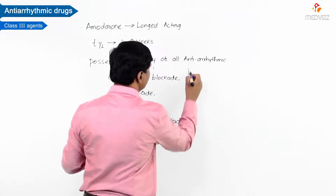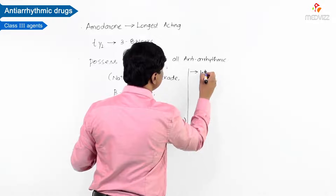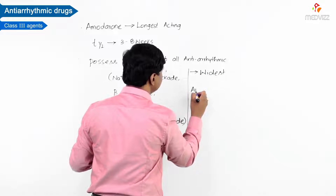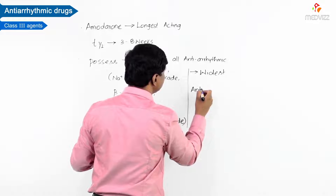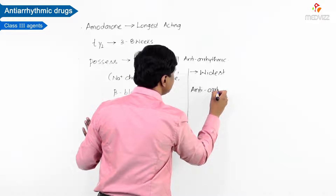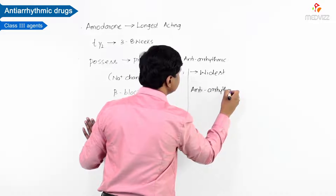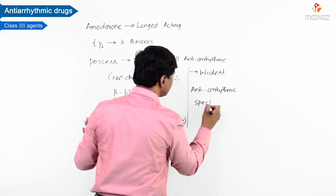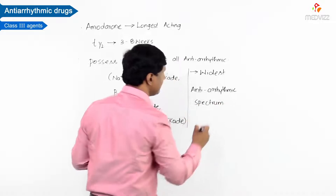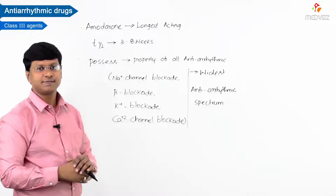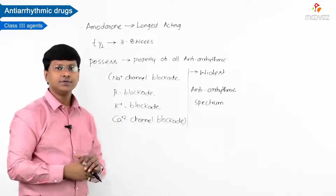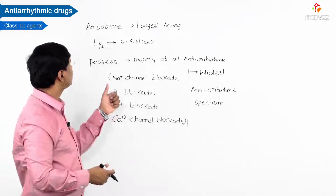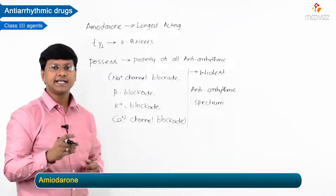Because amiodarone has the property of blocking all these channels and also has beta blocking property, due to this mechanism of action it has the widest antiarrhythmic spectrum.